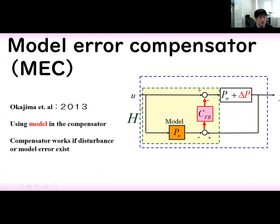Next, I introduce Model Error Compensator, MEC. This structure is produced by Okajima. This structure includes a model in the compensator, and the compensator works if disturbance or model error exists.